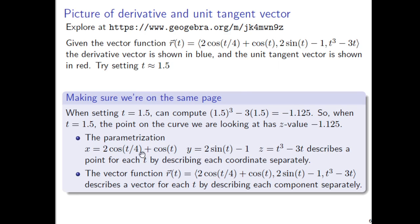So here's the parametrization that would be associated to the vector function, and the parametrization describes a point for each value of t describing each coordinate separately, the x, y, and z coordinate separately. The vector function, which was presented at the top here, describes a vector for each t by describing each component separately, separated by commas. So it's really, in the end, the same amount of information, the same overall information. It's just, is it technically a point or technically a vector? That's the difference between parametrization and a vector function.